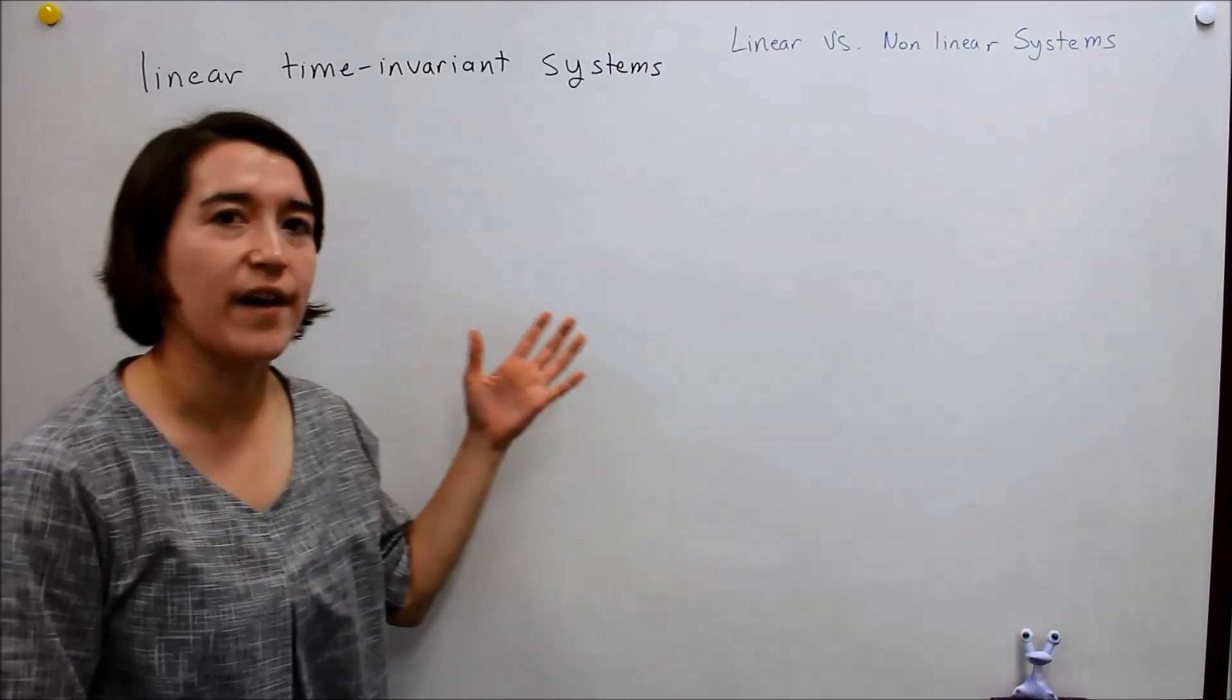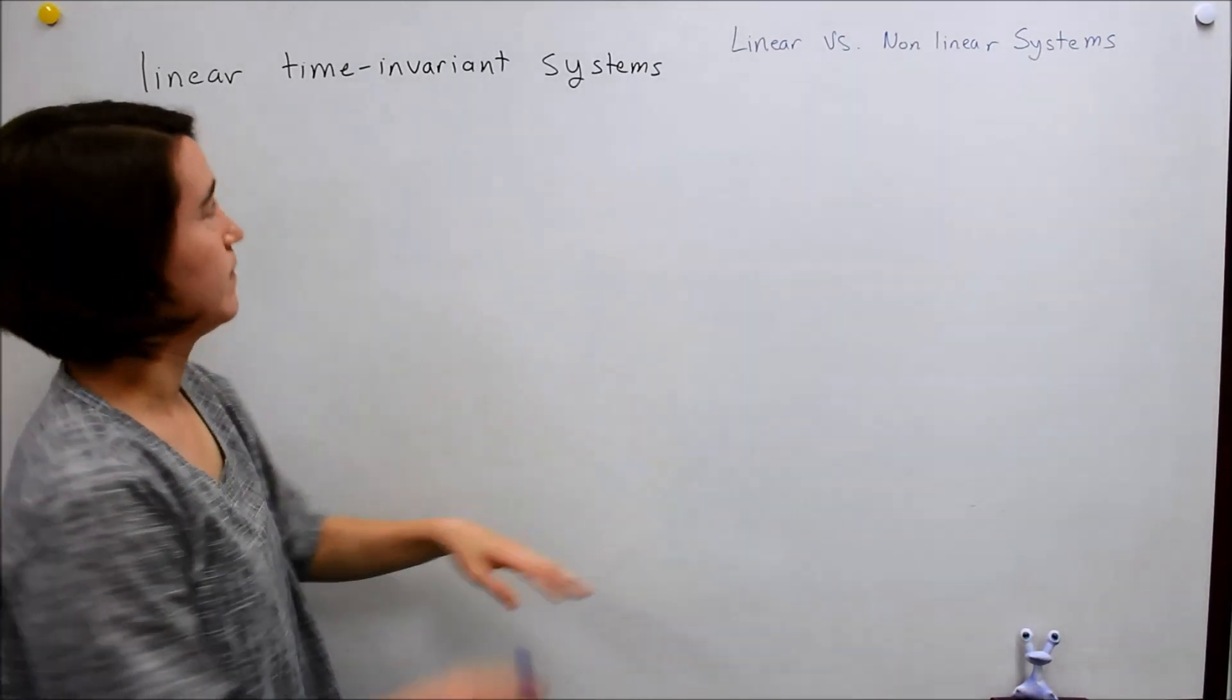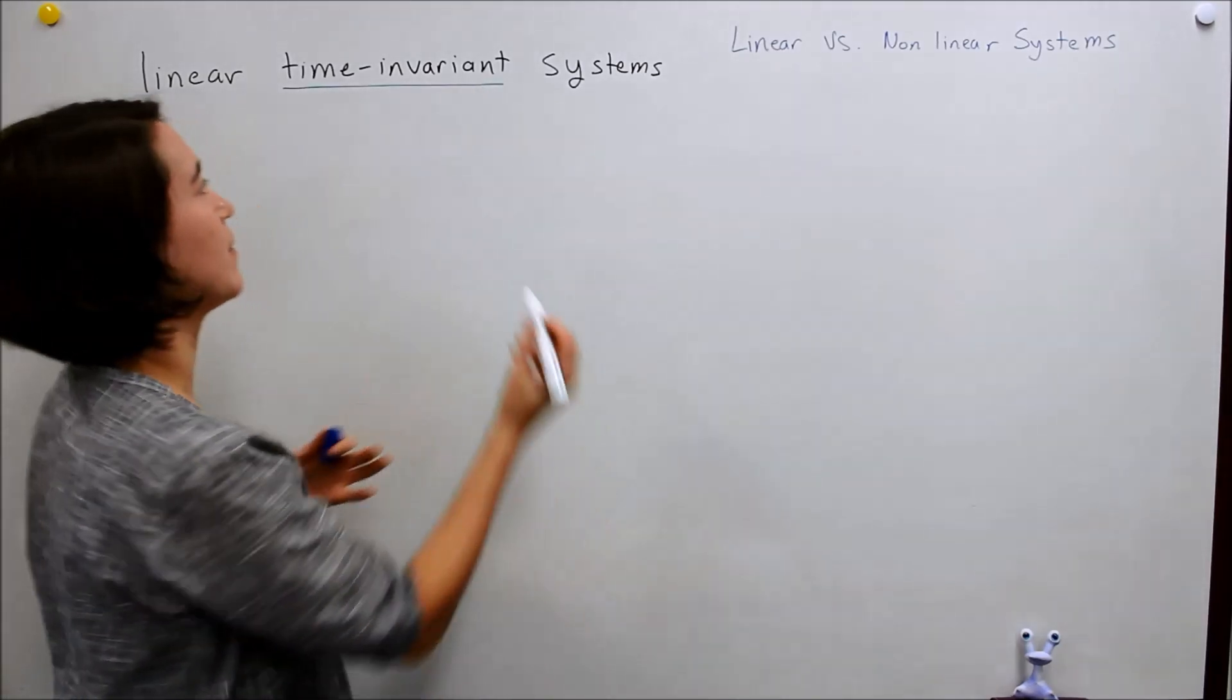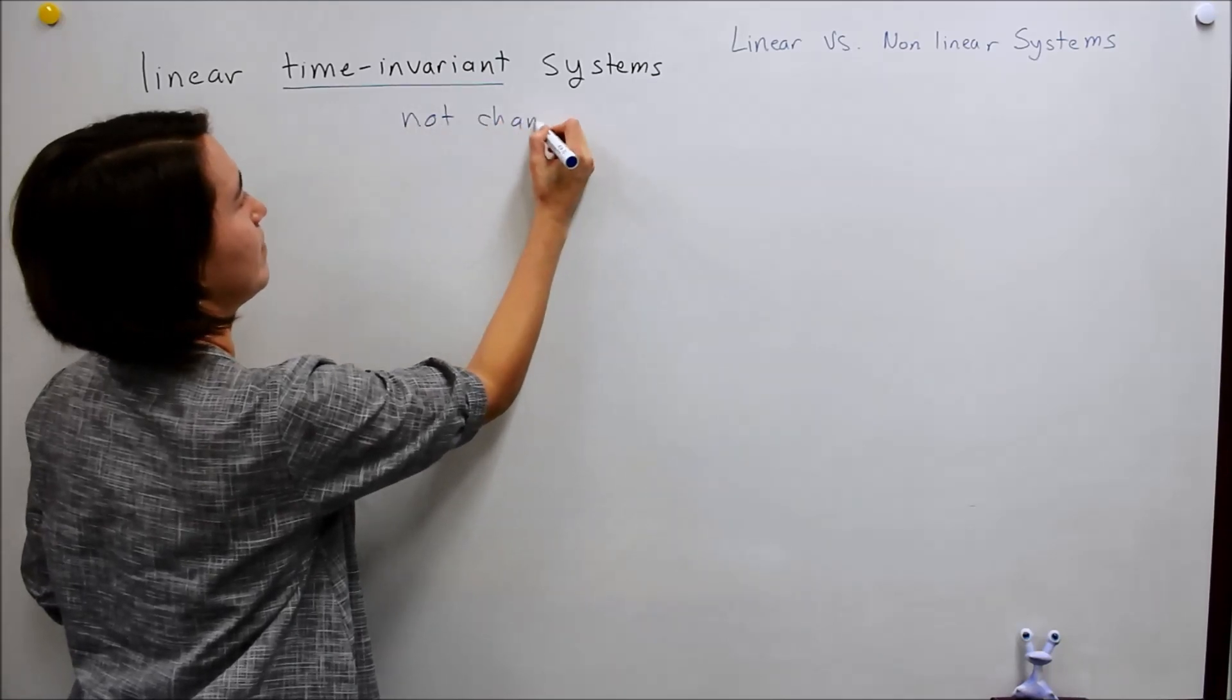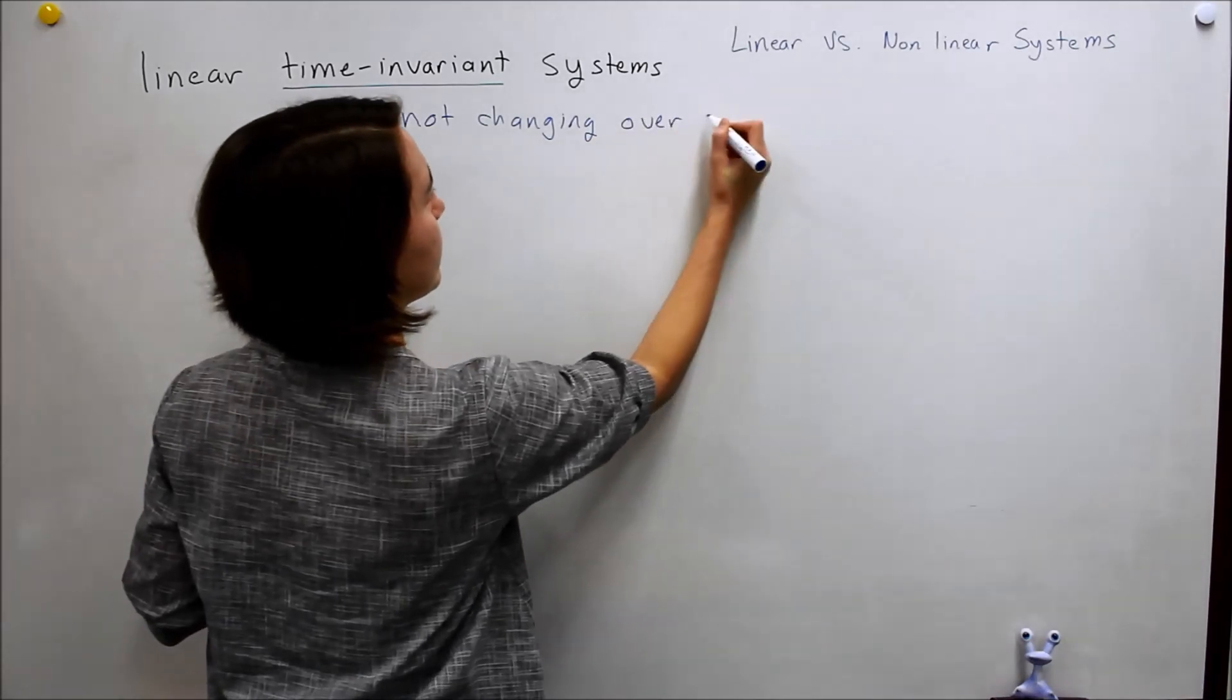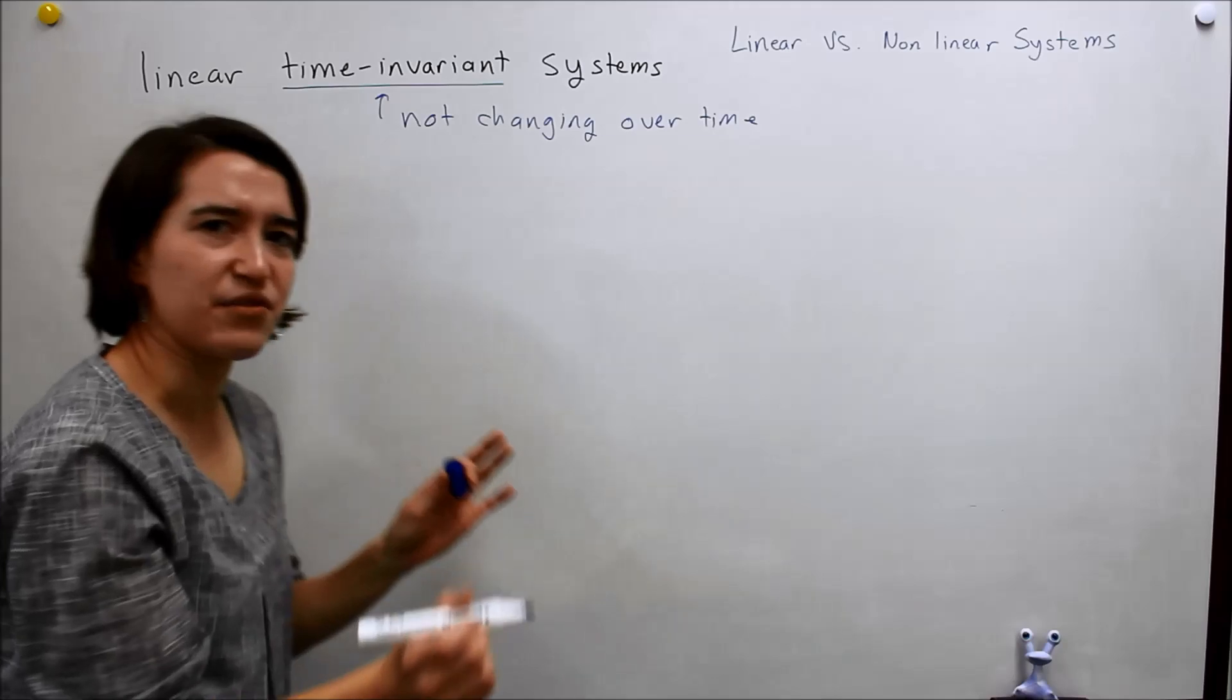So far, we have talked about linear time-invariant systems. And the time-invariant part means that the system is not changing over time. So, that's relatively straightforward.